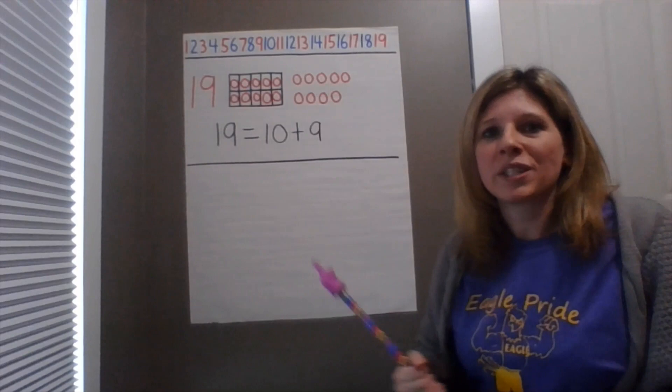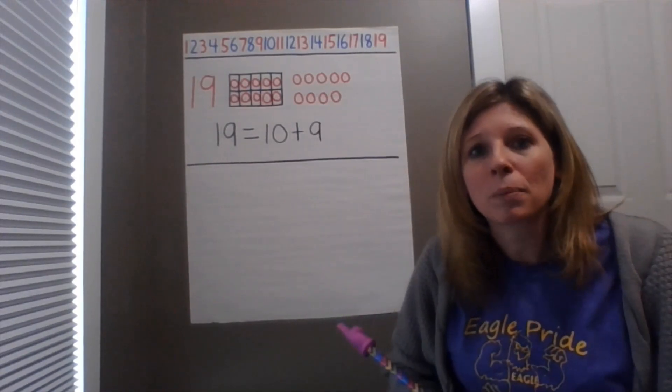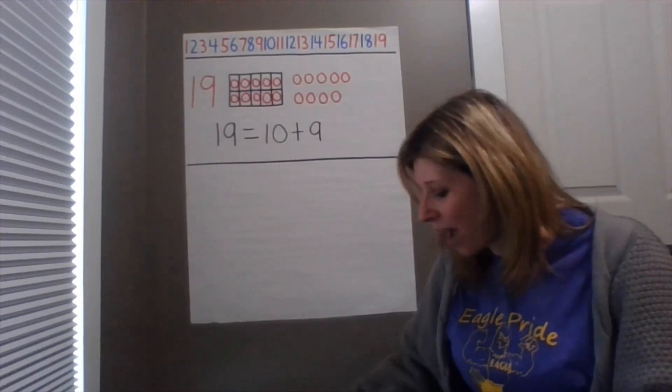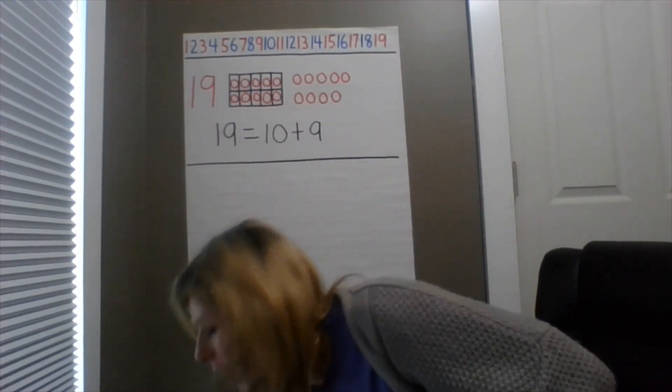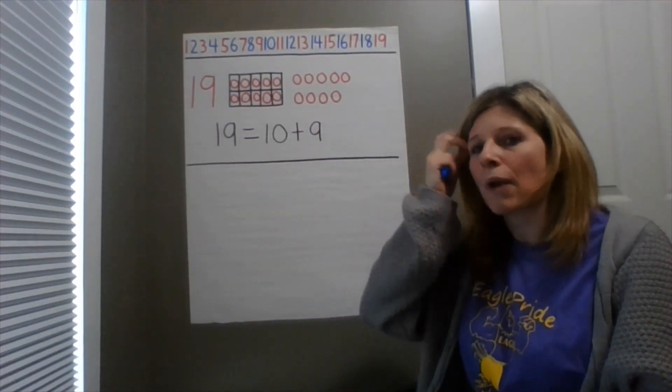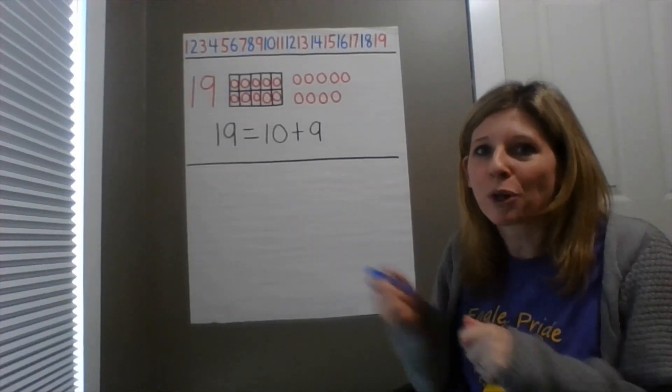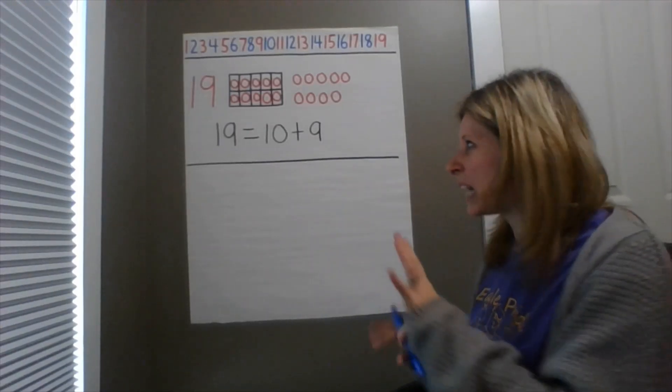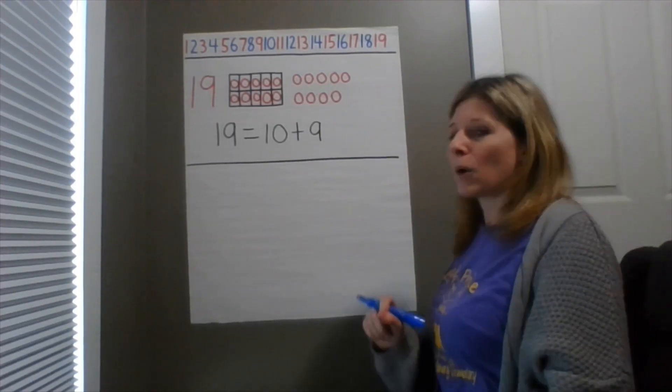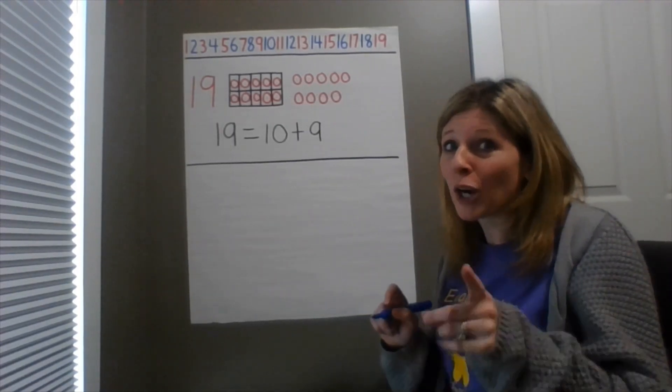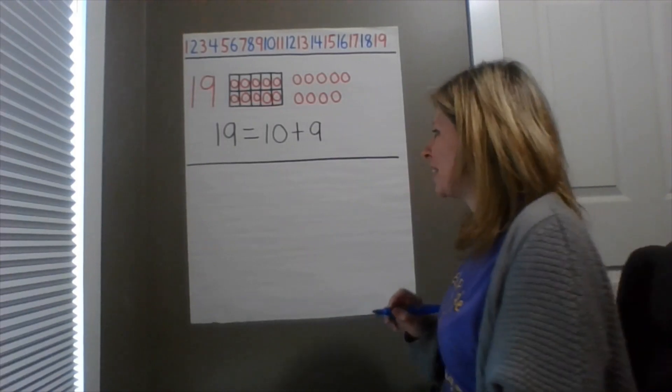All right. I have one more thing that I want us to do today. I'm going to write our numbers that we've been practicing all week down just to make sure that we haven't forgotten any of them. All right. So as I write the numbers down, I want you to say out loud what number I'm writing, and I'm going to kind of put them all over, not in a special order, and I'll show you why. All right. So as I write the number down, you at home say the number. All right.